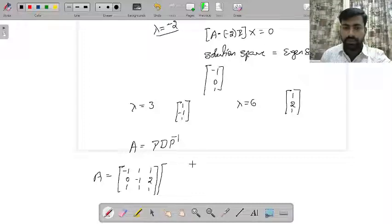When it comes to D, this is a diagonal matrix where the diagonal entries are the eigenvalues. The first diagonal entry is the eigenvalue for this eigenvector, which is negative 2. And next is 3 and next is 6.